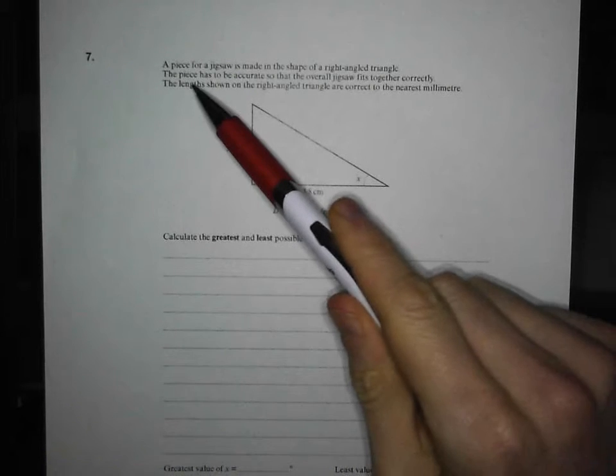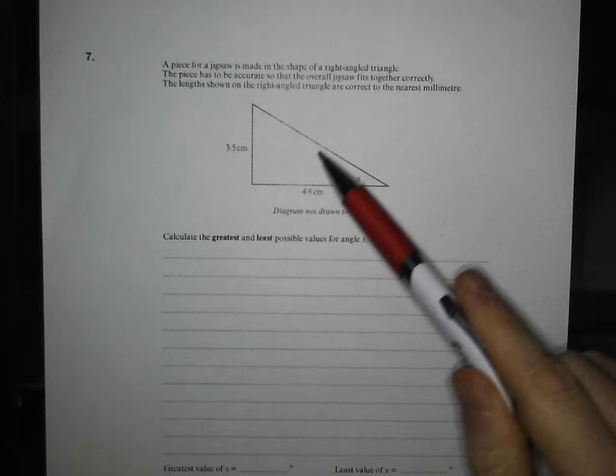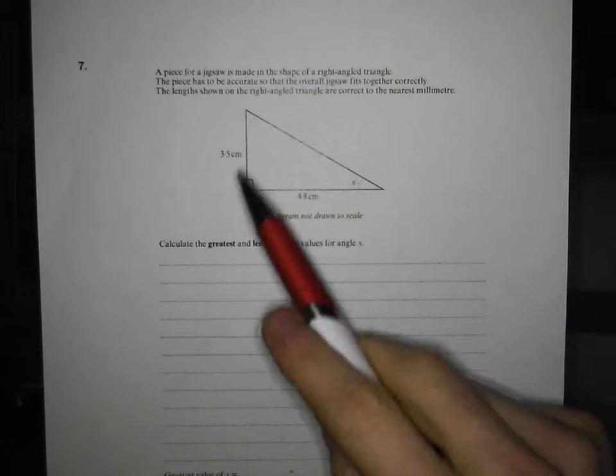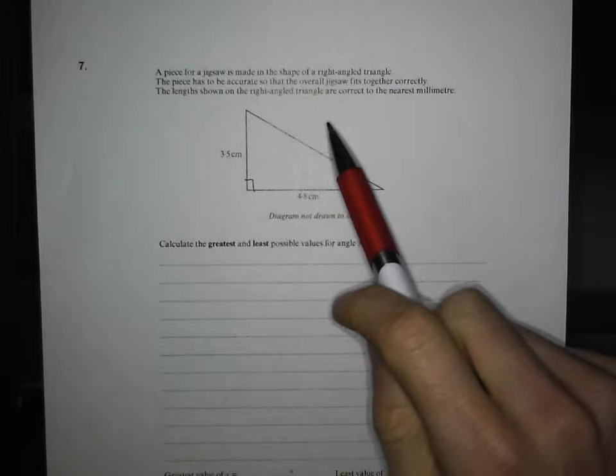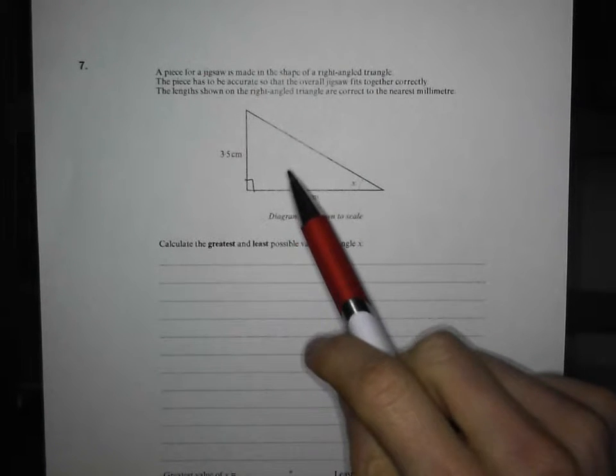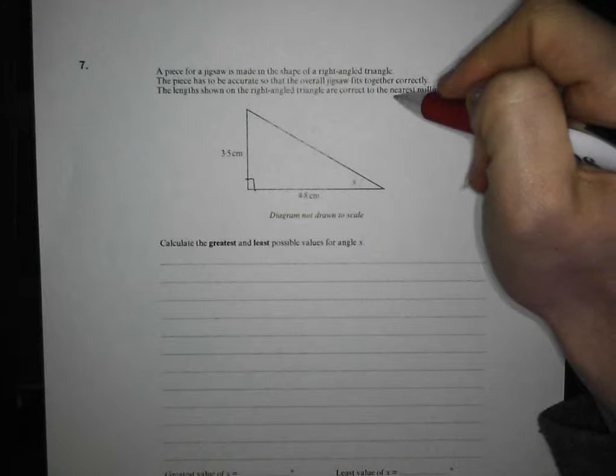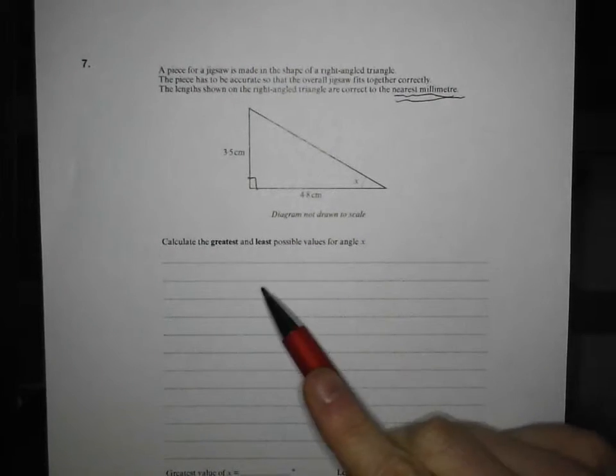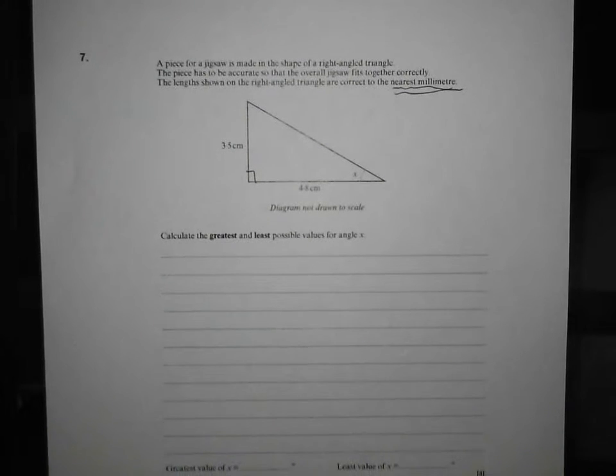Let's have a read. A piece for a jigsaw is made in the shape of a right angle triangle. Okay, so I'll mark my little right angle there, innocent enough so far. The piece has to be accurate so that the overall jigsaw fits together correctly. The lengths shown on the right angle triangle are correct to the nearest millimeter. Here's your first sign that danger's coming here.